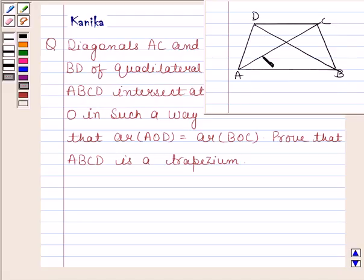Diagonals AC and BD intersect at O in such a way that area of triangle AOD is equal to area of triangle BOC.